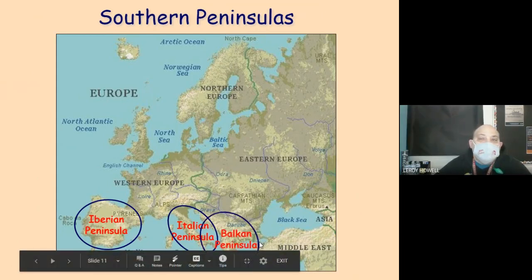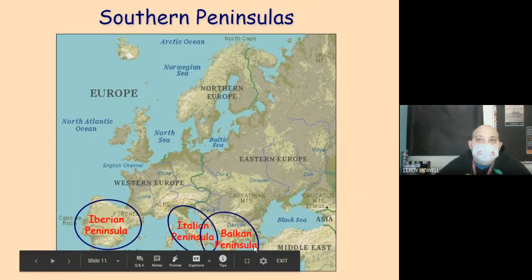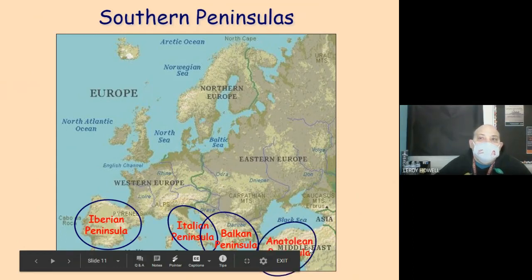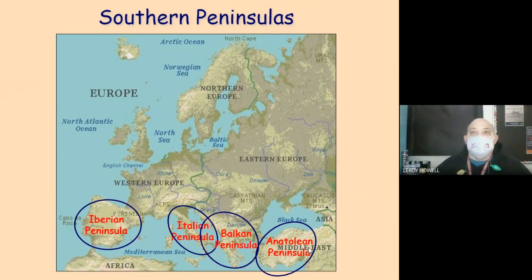The Balkan Peninsula is a little harder to distinguish. You might think it connects here or here, but it does not — there are very close land masses separated by narrow waterways called straits, which makes this whole area a peninsula. The Anatolian Peninsula is technically in Asia, not Europe, but it's very important to some of the history of the region.